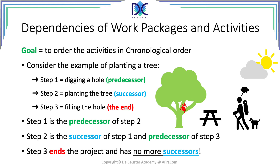You might ask: what if we skip step 2 and just dig a hole and fill it? This is not possible because our project is to plant a tree. You cannot go to step 3 unless you have the tree planted in the hole. You also cannot plant a tree without digging the hole first. This is the meaning of precedence information — the mandatory sequence of activities.